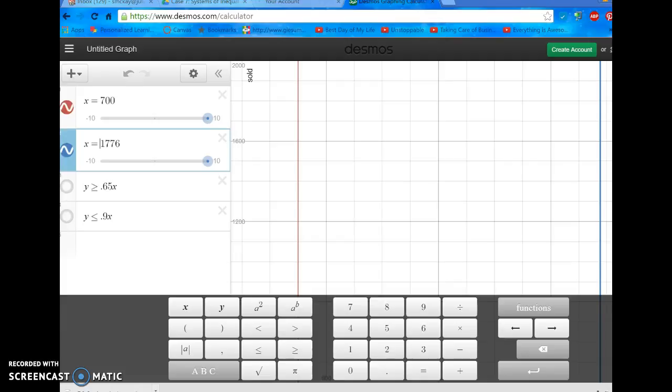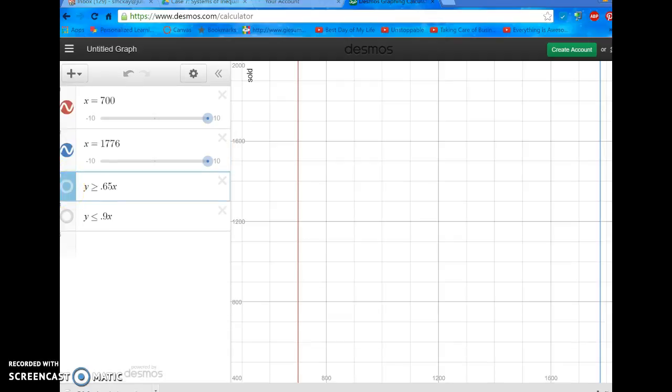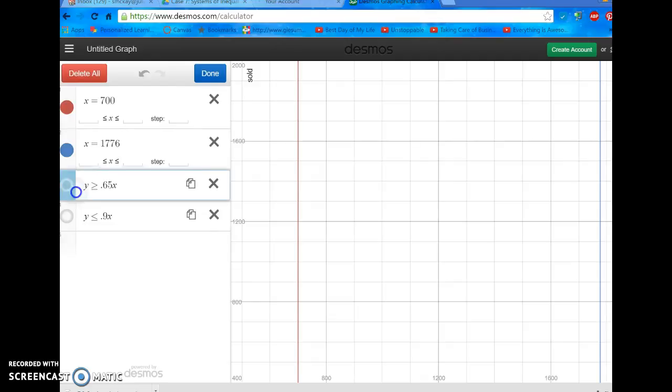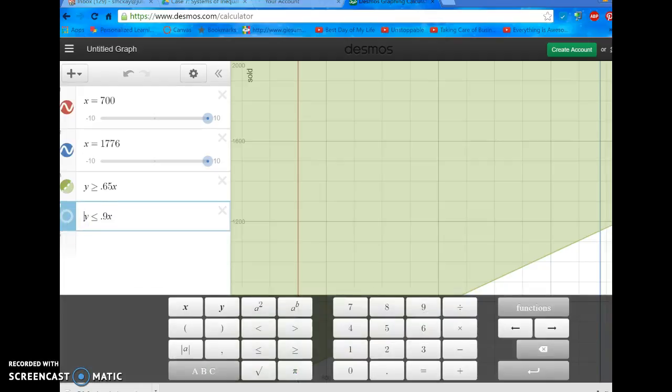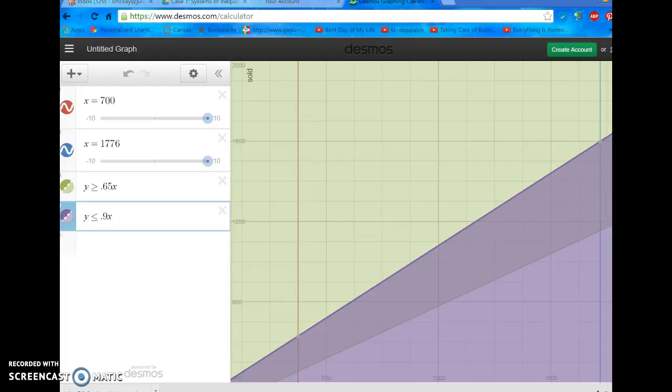Now let's go ahead and graph Y is greater than or equal to 0.65X. Okay, just having trouble with my tablet. So you can see now that I have Y is greater than or equal to 0.65X and you can see that it's drawn my boundary line and it's shaded above it, right? Because Y is greater than that. And remember we're still looking at what's in between these two lines right here, okay? Now let's look at the next one. So this one is Y is less than or equal to 0.9X. So again, now I've got a new line, a boundary line, and it's shaded below.